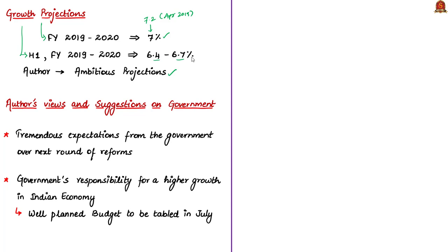These are the author's views about the decisions taken by RBI. The author finally gives suggestions to the government, noting there are tremendous expectations from the new government elected by a strong mandate. It is the government's responsibility to lead the Indian economy to a higher growth path, possible only through a well-planned financial budget to be tabled by the new government in parliament in the month of July.